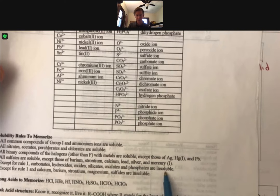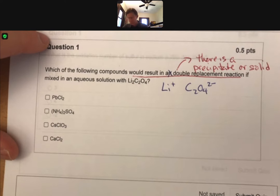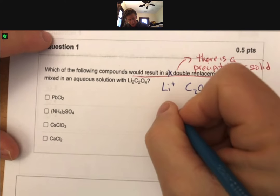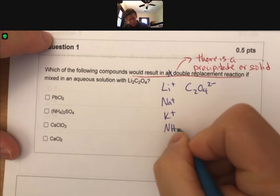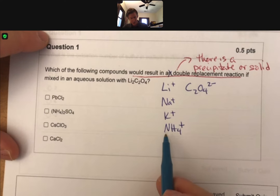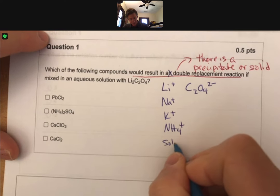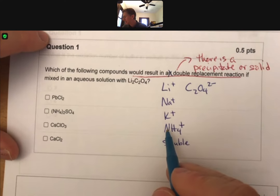Oxalate is on our solubility list right here. It says except for rule one, oxalates are insoluble. So as we look down, rule number one says that anything with a group one or an ammonium will be soluble.